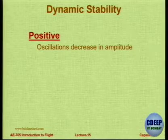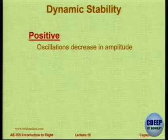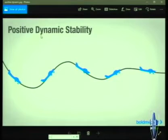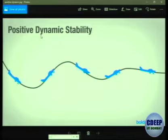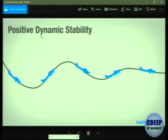Now let us come to dynamic stability. Whereas static stability concerns only the initial tendency, in dynamic stability we want the aircraft to actually come back to the original position. The final outcome depends on dynamic stability; the initial response depends on static stability. An aircraft has positive dynamic stability if the oscillations after disturbance reduce in amplitude with time. If they damp out very fast, it is highly dynamically stable. If oscillations do not damp out, it is neutrally stable. If oscillations increase, it is unstable.